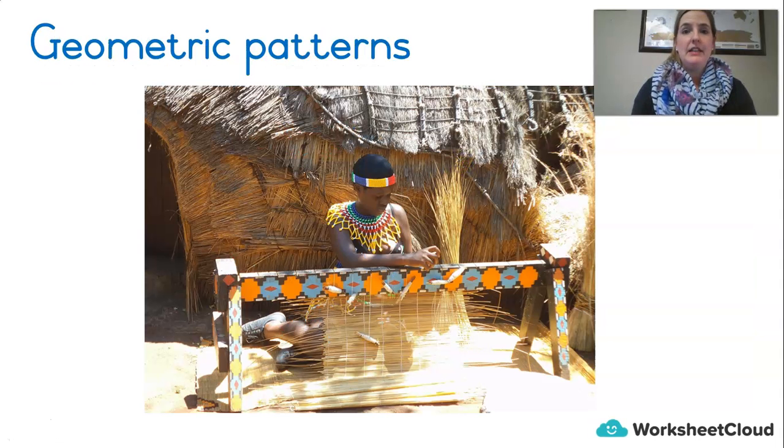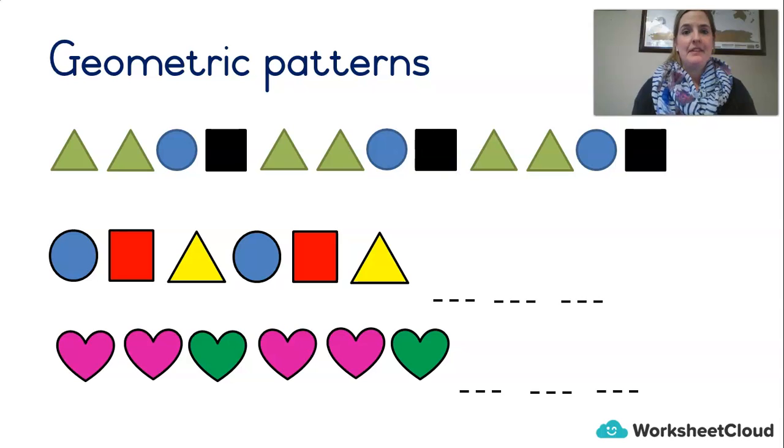In maths, we get patterns and we get two different types. One is called geometric patterns, which is just a fancy way of saying shapes. The other one is called number patterns, which is using numbers to create a pattern. And we're going to be doing those two today: shape patterns and number patterns. Let's see if you remember how to do shape patterns. Look at this one I did for you at the top. It helps to say it out loud.